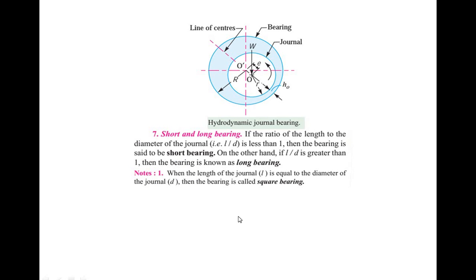The next terms are short and long bearing. If the ratio of the length to the diameter of the journal, that is L by d, is less than 1, then the bearing is called a short bearing. If L by d is greater than 1, then the bearing is called a long bearing. One important point to note: when the length L equals the diameter d of the journal, that is L by d equals 1, then the bearing is called a square bearing.